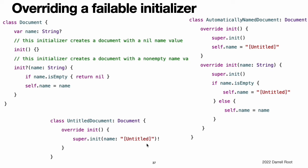You can use forced unwrapping in an initializer to call a failable initializer from the superclass as part of the implementation of a subclass's non-failable initializer. For example, the UntitledDocument subclass is always named [untitled] and it uses the failable init(name:) initializer from its superclass during initialization. In this case, if the init(name:) initializer of the superclass were ever called with an empty string as the name, the forced unwrapping operation would result in a runtime error. However, because it is called with a string constant, you can see that the initializer will not fail, so no runtime error can occur in this case.